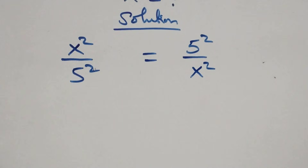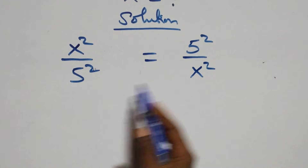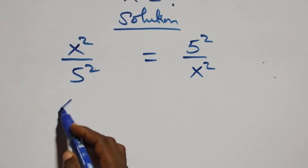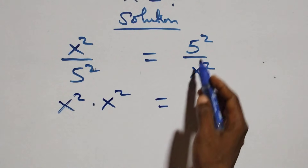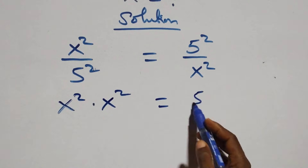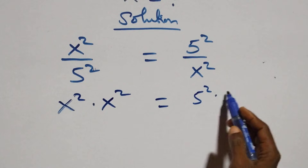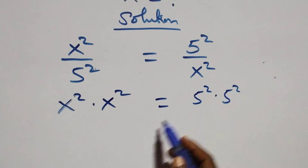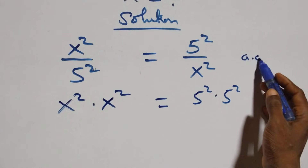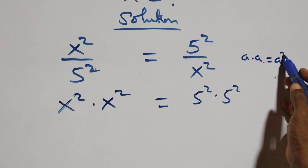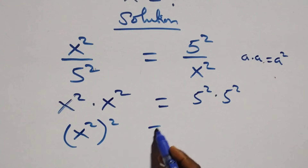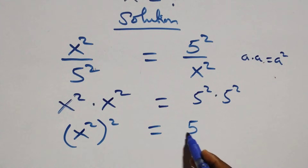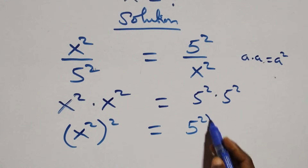The next step: cross multiply x squared times x squared equals five squared times five squared. This follows because when we have a times a we can write it as a squared, and the same thing multiplied gives us x squared to the fourth power equals five squared to the fourth power.